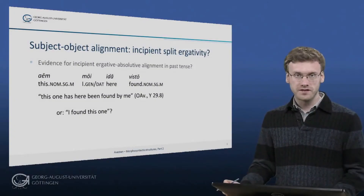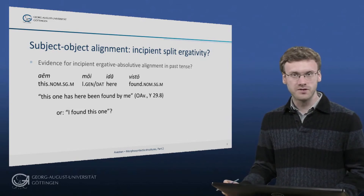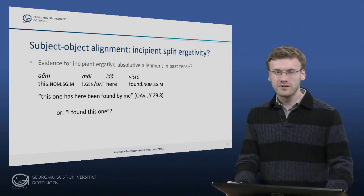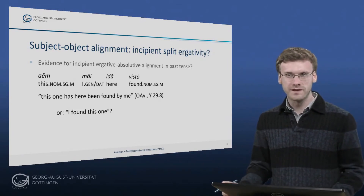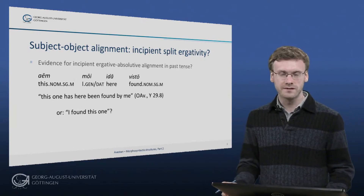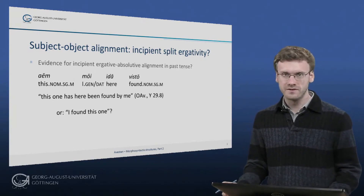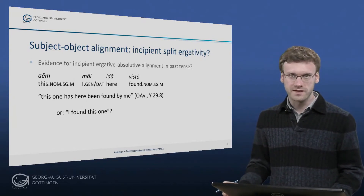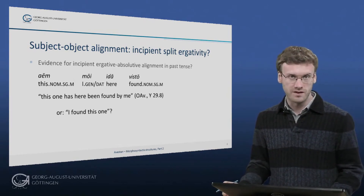Subject-object alignment in Avestan is overwhelmingly of the nominative-accusative type. Yet in light of a trend towards ergativity in the past tense in later Iranian languages, it is a matter of debate whether certain passages in Avestan should be interpreted as anticipating such a development.